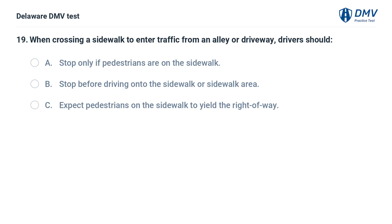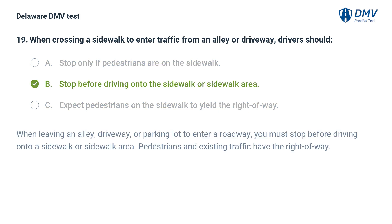When crossing a sidewalk to enter traffic from an alley or driveway, drivers should: A. Stop only if pedestrians are on the sidewalk. B. Stop before driving onto the sidewalk or sidewalk area. C. Expect pedestrians on the sidewalk to yield the right-of-way. Answer: B. Stop before driving onto the sidewalk or sidewalk area. Pedestrians and existing traffic have the right-of-way.